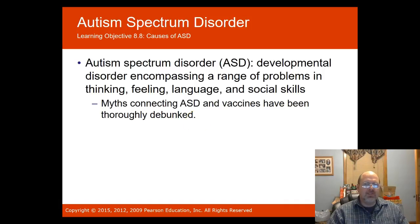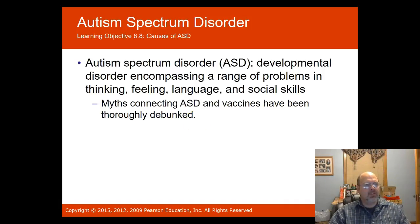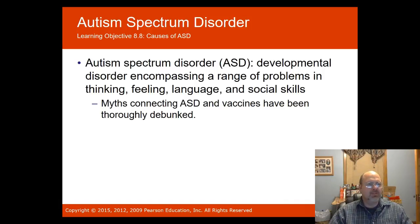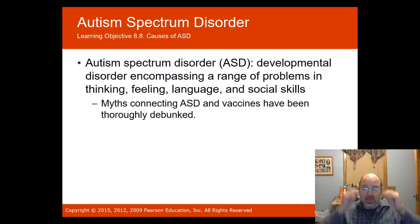Autism spectrum disorder is a developmental disorder encompassing a range of problems in thinking, feeling, language, and social skills. There are many myths connected with autism spectrum disorder and vaccines, but the link to vaccines has been thoroughly debunked.